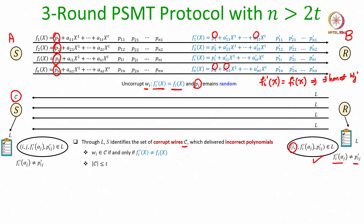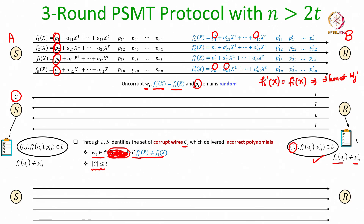All these properties were proved in the context of the pad exchange protocol in the last lecture. Specifically: if the i-th polynomial has been delivered incorrectly, then wire i will be present in the set C. The cardinality of set C is at most T, since there can be at most T corrupt wires. This concludes the first round (sender to receiver) and the second round (receiver to sender).